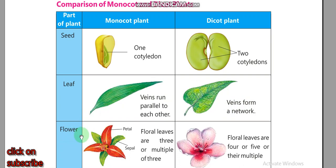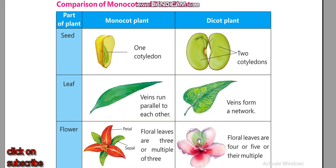The third characteristic is the flower. The floral leaves of monocot plants are in multiples of three — meaning 3, 6, or 9. The floral leaves of dicot plants are 4 or 5, or multiples thereof — such as 4, 8, or 12, and 5, 10, or 15.